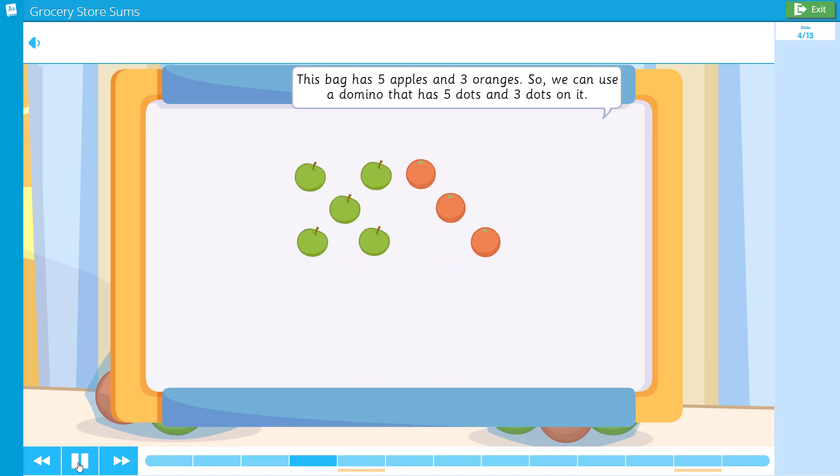This bag has five apples and three oranges. So we can use a domino that has five dots and three dots on it. Five plus three equals eight.